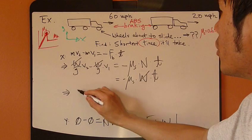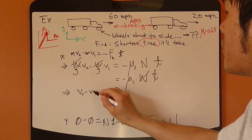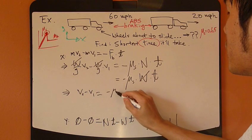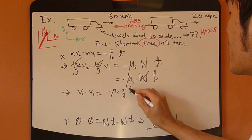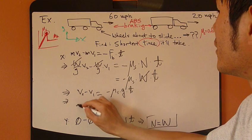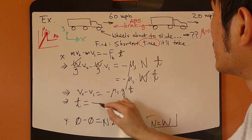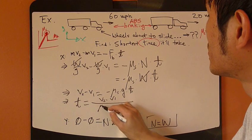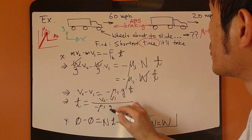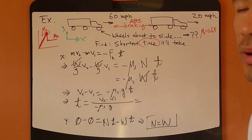So I'm going to move the G over. V₂ minus V₁ equals negative μ_s times G times T. Therefore time equals, boom, move everything over. Negative G equals. Now you plug things in.